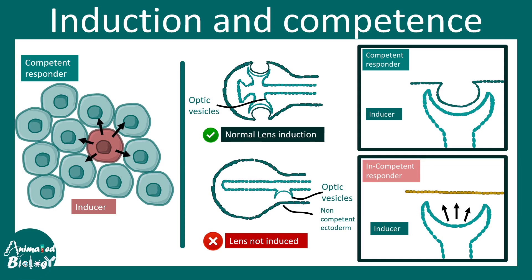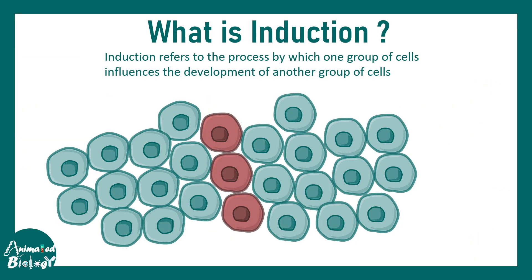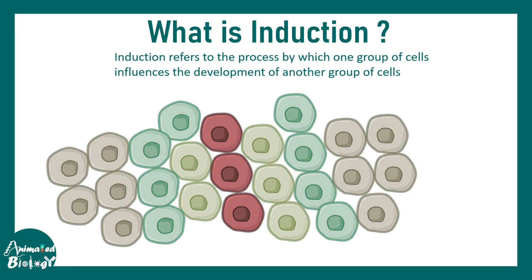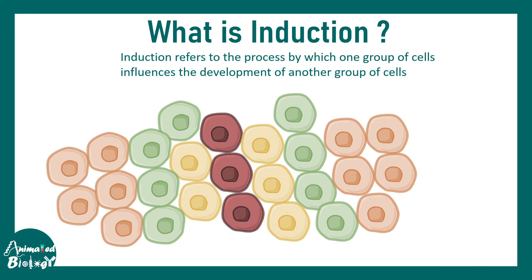In this video we'll be talking about one fundamental concept in developmental biology: induction and competence. Induction refers to the process by which one group of cells influences the development of another group of nearby cells. Here you can see the red cells influence the nearby cells, causing them to acquire different cellular fates. In most cases, induction happens via secreted signals and morphogen gradients.